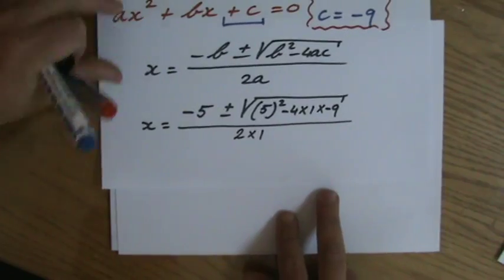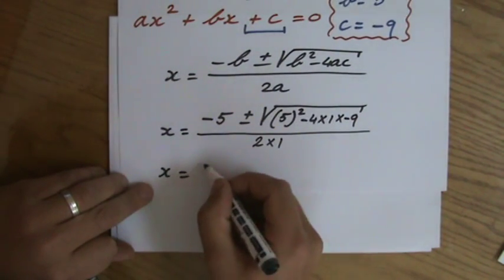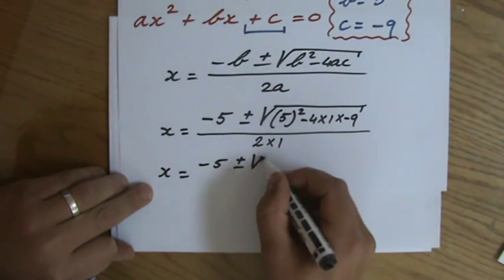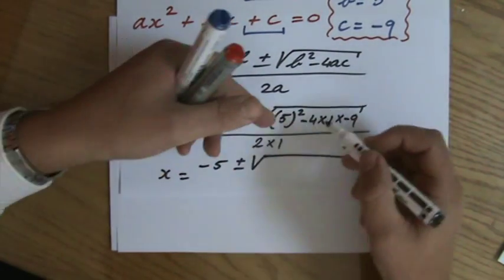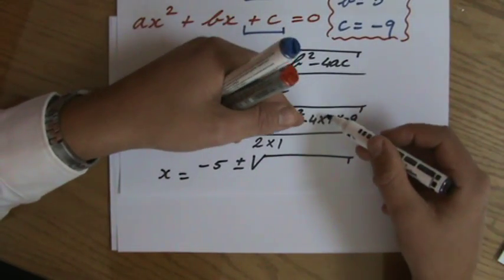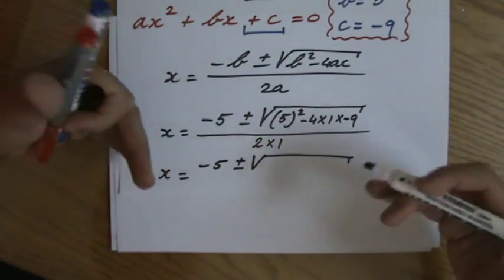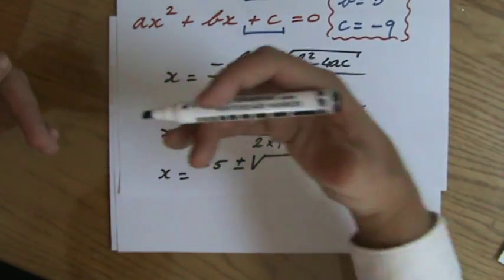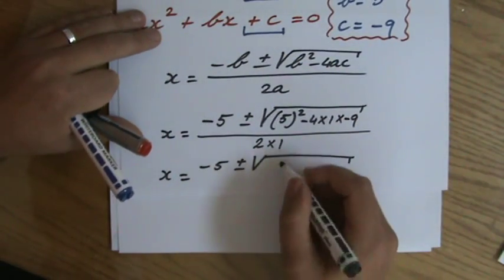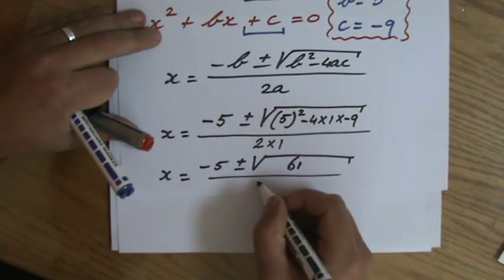Minus five plus or minus - now I can use my calculator - 25, and then minus four times one times minus nine, that's going to be 36. 25 plus 36 that will be 61, and all of that divided by two times one is two. Now I've shown my workings.